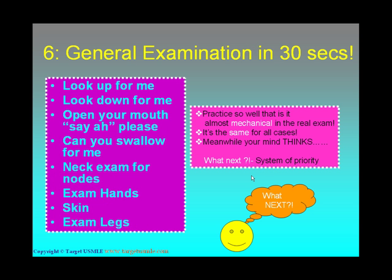Tip number six: do a general examination. Many students I've coached skip general examination and go straight to the systemic examination. There are important clues in general examination — purpuric spots, rash, dry skin, pedal edema. Sometimes there are no clues in history and general examination might offer you the clue. General examination is the same for all patients, and while you're doing it, your mind is also thinking about what system to examine next, giving you a quick 30-second interval to plan the next step.